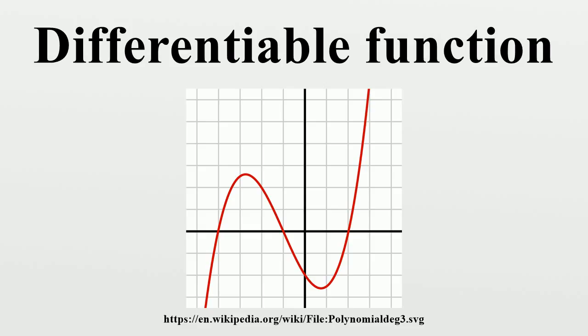Formally, a function of several real variables f from Rn to Rm is said to be differentiable at a point x0 if there exists a linear map J from Rn to Rm such that if a function is differentiable at x0,